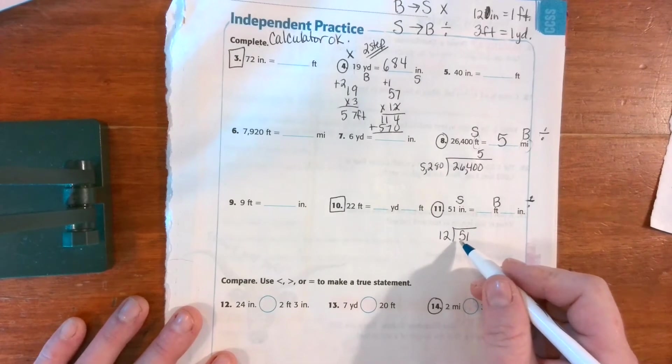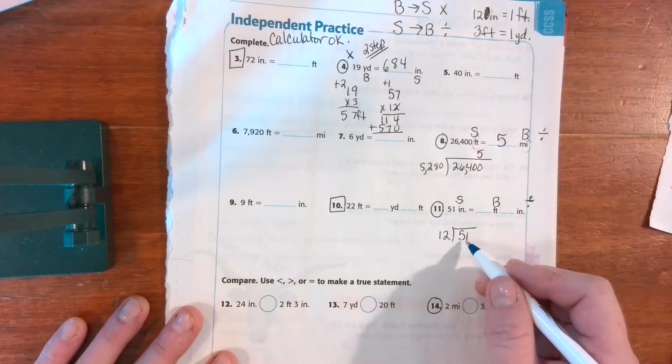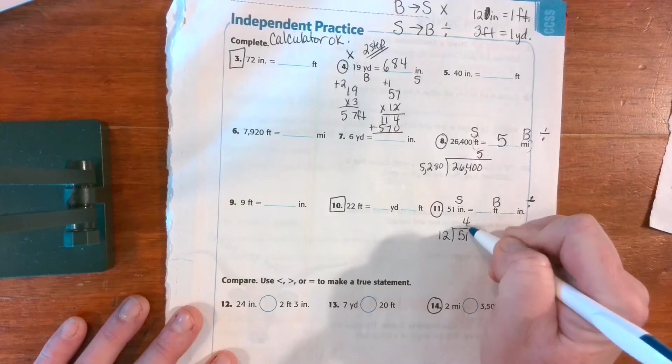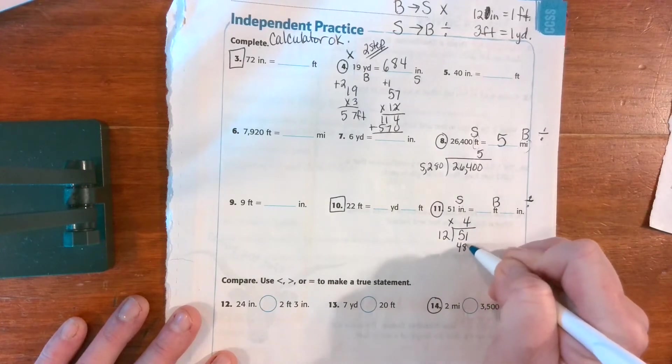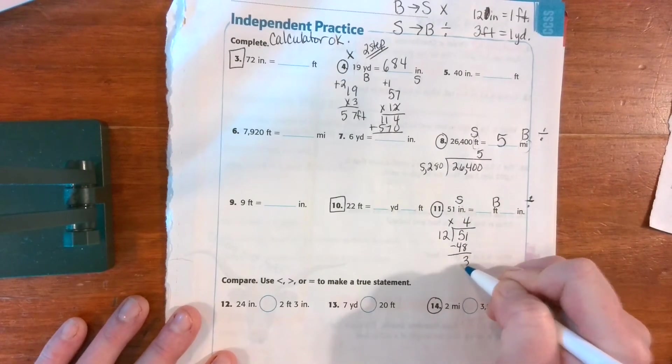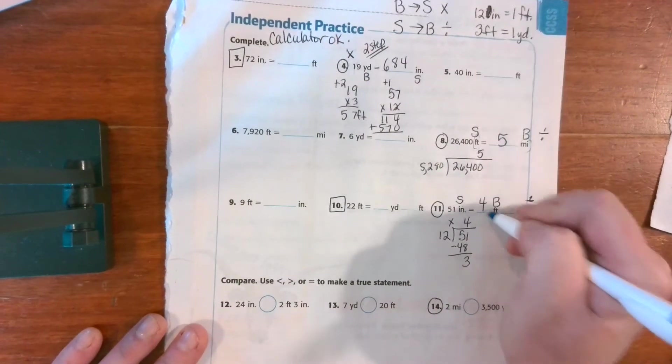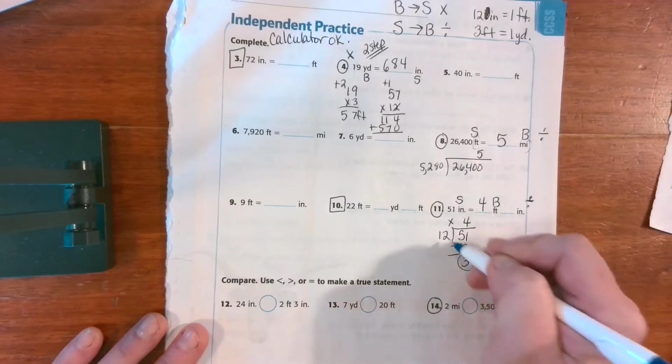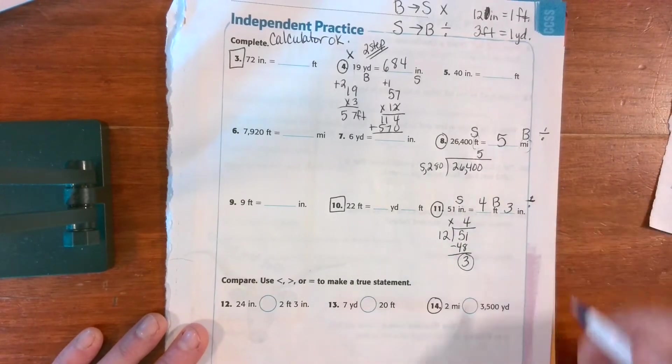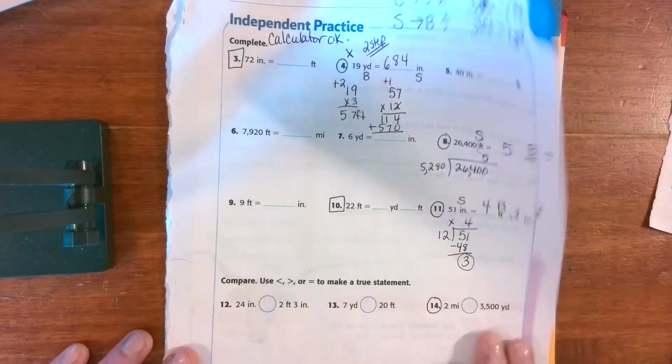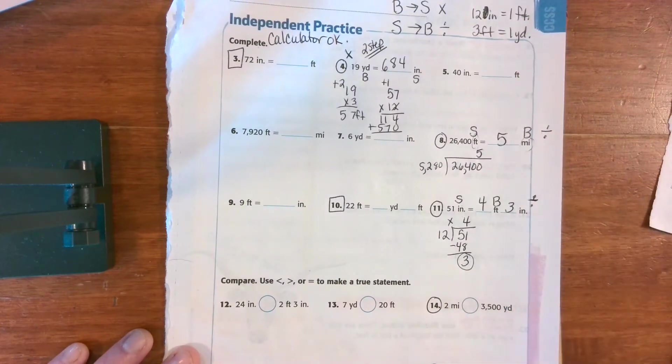12, 24, 36, 48. So I know that's where I'm going to stop because the next one's going to go over. And I'm going to have 3 left over. So I had 4 feet plus a remainder of 3, which is 3 out of 12 inches.